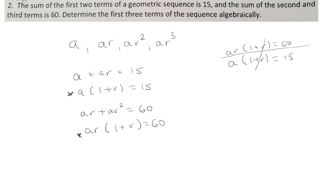1 plus R is going to cancel. A is going to cancel. So I have R on the left. And on the right, I have 60 divided by 15, which is 4.